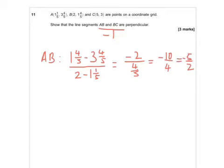So that is the gradient of AB. Now BC, or CB, it doesn't really matter. Okay, we're going to do three minus one and four-fifths, the rise over the run, remember. Five minus two.